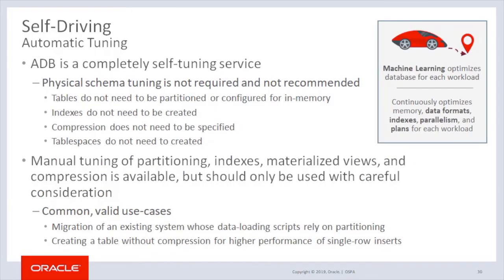Although Autonomous Database is designed to completely automate and provide the best environment for running Oracle database applications, Oracle realizes there may be specific reasons — such as application compatibility or referential integrity — where items such as indexes may be required. So let's review where Oracle recommends self-tuning services provided by the Autonomous Database. Number one: tables do not need to be partitioned, and partitioning should not be used as a performance-enhancing design objective in Autonomous Database deployments. Databases that are being migrated to Autonomous Database should have partitioning removed unless there's a specific reason for its use.